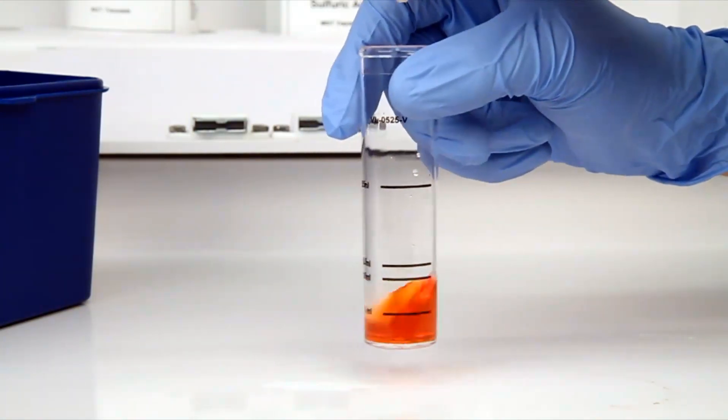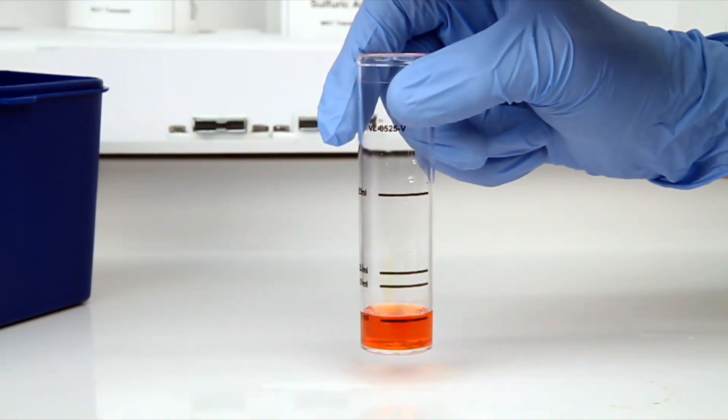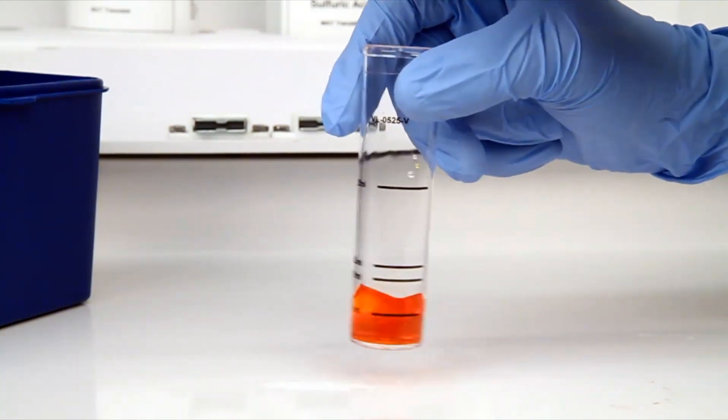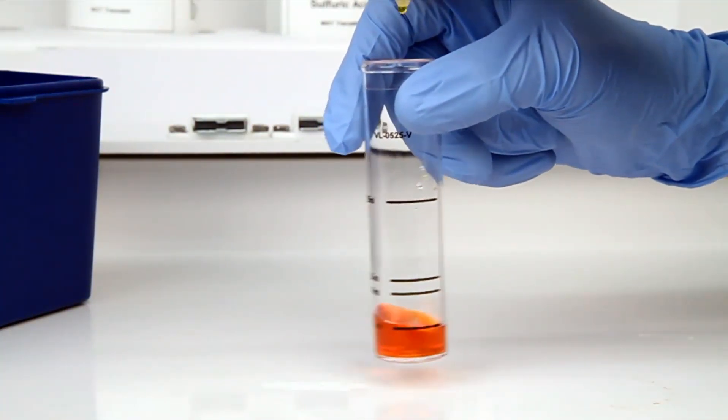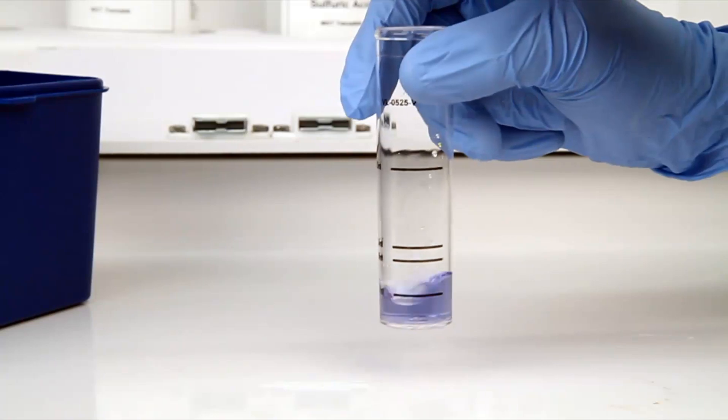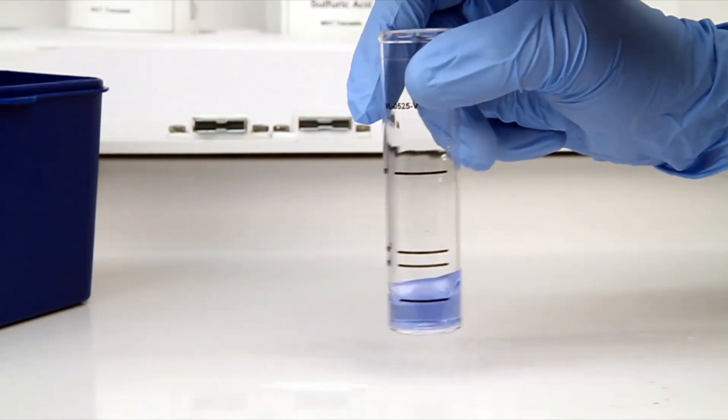After the addition of each drop of titrant, you want to swirl the vial to make sure the sample is properly mixed. According to the endpoint ID procedure, the titration is complete when the sample is changed from orange to blue.